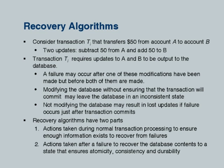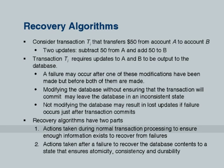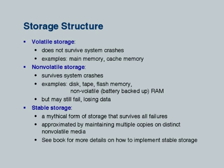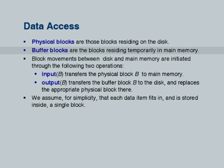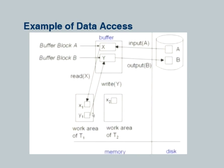The actions taken during normal transaction processing are primarily logging, and then actions taken during recovery use the log to recover. Physical blocks are data blocks on disk; buffer blocks are the same data temporarily in memory. Input and output are operations which read from disk and write to disk. Read and write, in contrast, denote getting data from the buffer into the transaction's work area — write puts it back in the buffer but does not mean the data is output to disk.